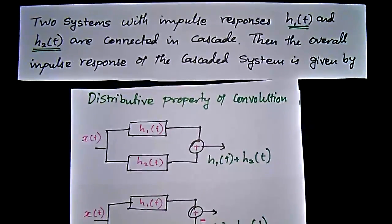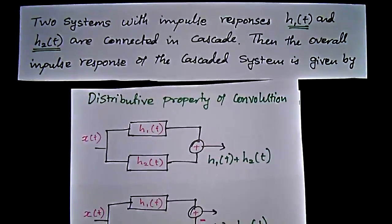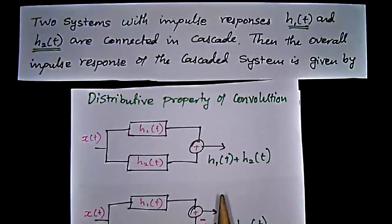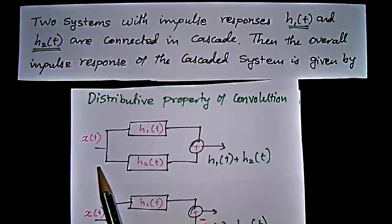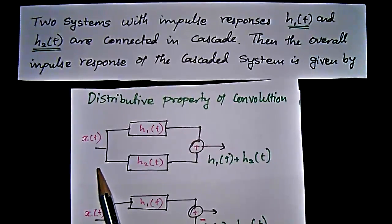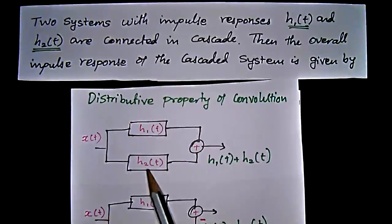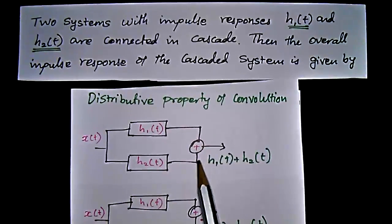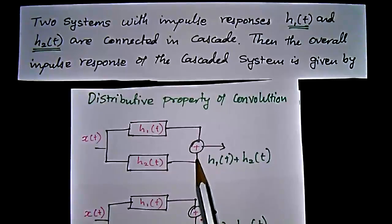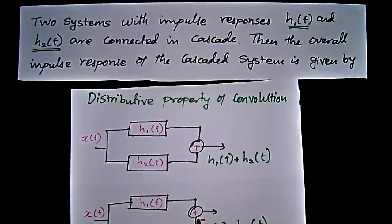What is distributive property? In simple words, in parallel mode - but we should not say that. We should say it's a distributed connection. So we give input x(t) to h₁(t) and h₂(t) in the distributed configuration, and we have a summer here, so we get h₁(t) plus h₂(t).